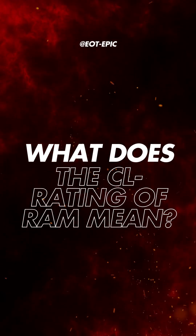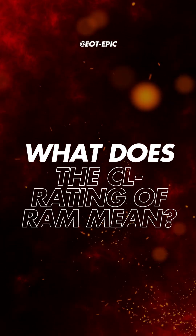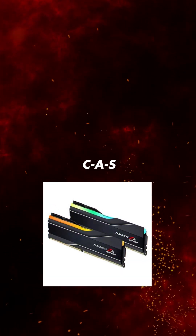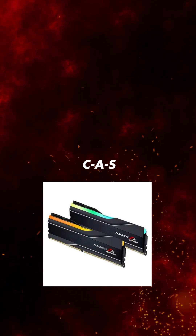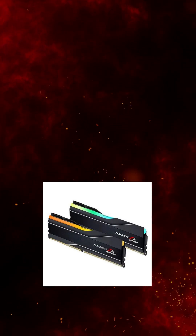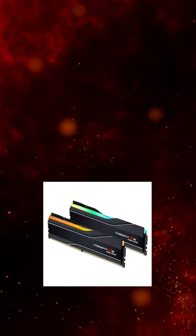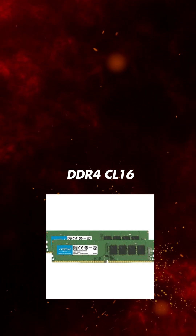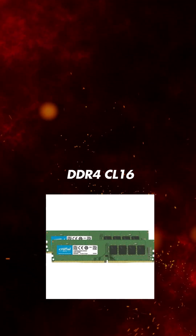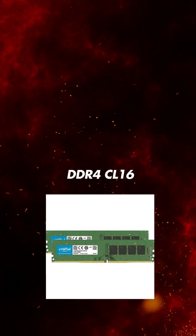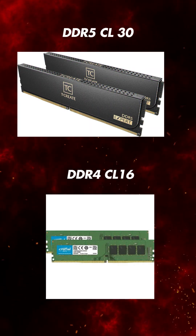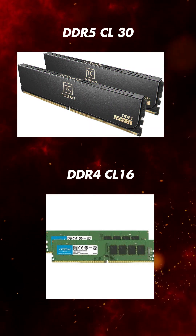What is the CL rating on RAM? The CL rating, or CAS latency, is how fast a RAM stick can receive and transmit signals. A RAM stick with a CL rating of 16 will transmit a signal faster than a RAM stick with a CL30 rating.